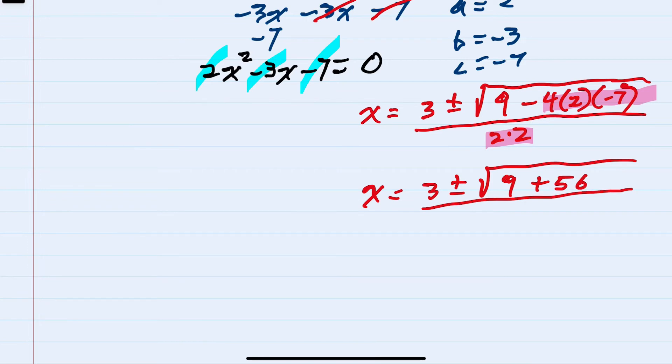over 2 times 2, which is 4. Continuing to simplify, we would simplify underneath the radical since those are being grouped together, and doing that addition we would have 9 plus 56 is 65, over 4.